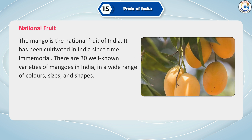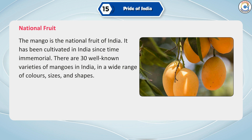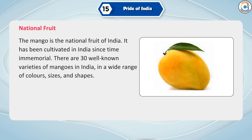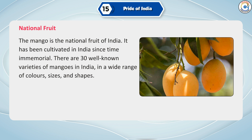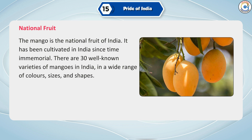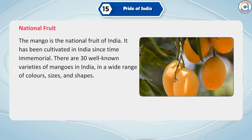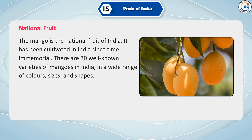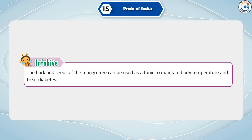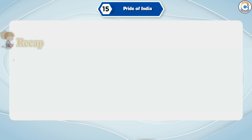The mango is the national fruit of India. It has been cultivated in India since time immemorial. There are 30 well-known varieties of mangoes in India in a wide range of colors, sizes and shapes. The bark and seeds of the mango tree can be used as a tonic to maintain body temperature and treat diabetes.